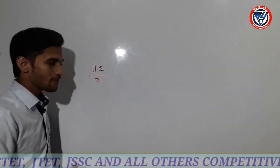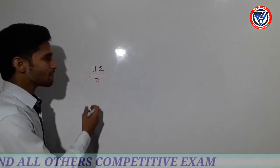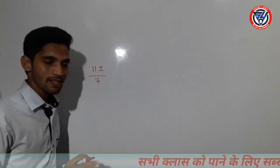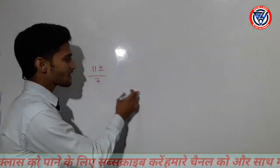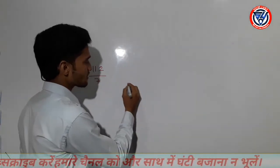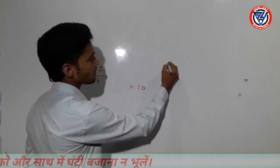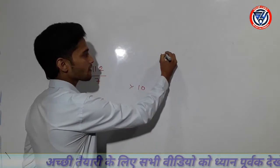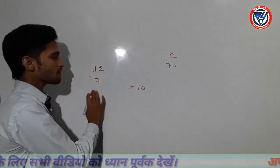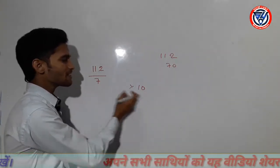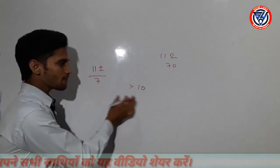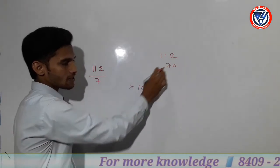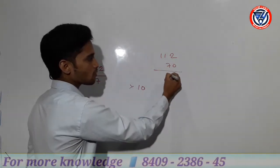Toh agar main 112 ko saath se divide karoon, agar mujhe pata nahi ki kaise bhaag laga raha — toh mujhe saath ka jo pahada man kar raha hoon, pada dijiye. Theek hai? Jo mana ho, jo aapko aasan lage. Toh hum jante hain 7 ka 10 kitna hota? 7 das — kitna hota? 70. Aur mera yahan kitna hai? 112. Toh 112 mein se hum 7 ko 10 baar padhe — apne mann se jitna mann padhe dijiye. Toh 70 tak padhe — 7 ka 10 ka 70. Toh 112 hai, aur 70 tak hum le liye. Toh bacha kitna dosto? 42.